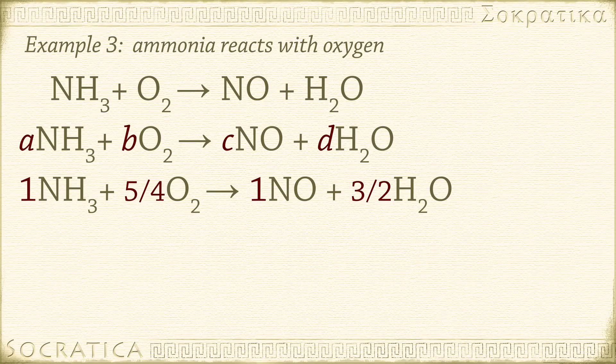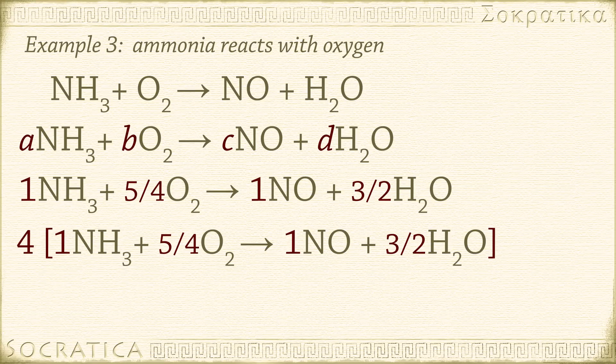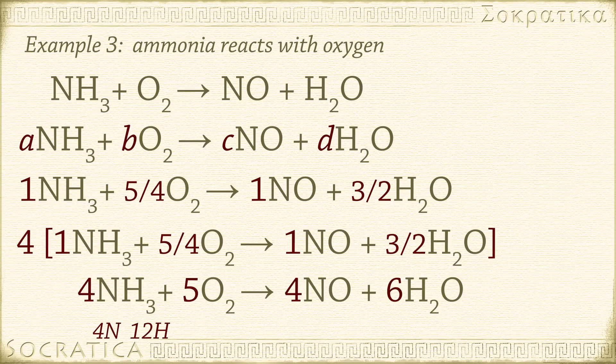Multiply everything by 4 to get rid of those fractions. 4 times 1 NH3 plus 5 over 4 O2 yields 1 NO plus 3 over 2 H2O equals 4 NH3 plus 5 O2 yields 4 NO plus 6 H2O. Double-check your work by counting the number of atoms on both sides. 4N, 12H, 10O on the left, 4N, 12H, and 4 plus 6 is 10O on the right. This equation is balanced.